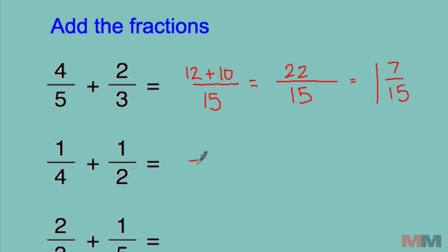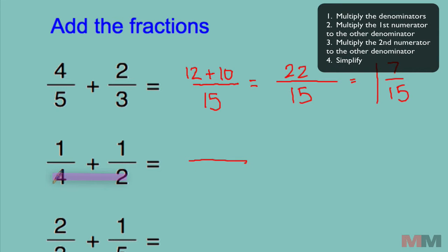Let's try another one. First step: Again, multiply the denominators. 4 times 2, 8. Start with the top left numerator and multiply it to the other denominator. 1 times 2, 2. And then add it to the other numerator times the denominator. So I'm going to add it to 1 times 4, which is 4.